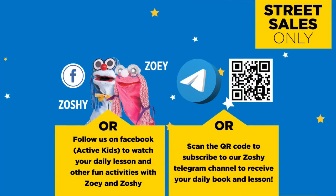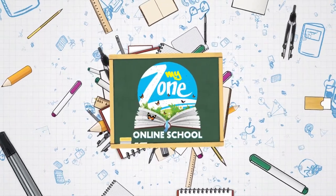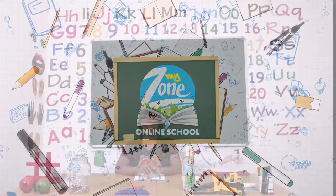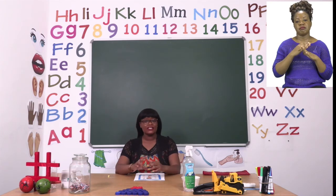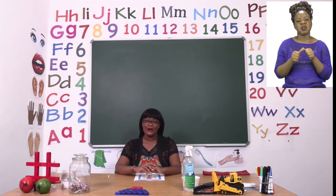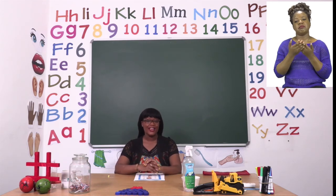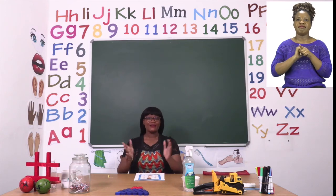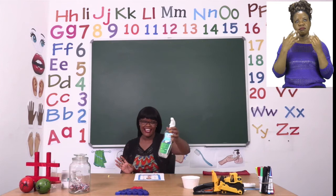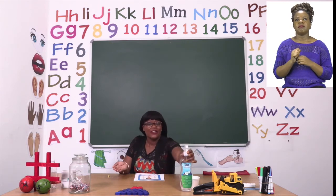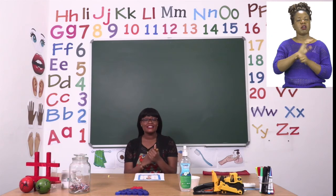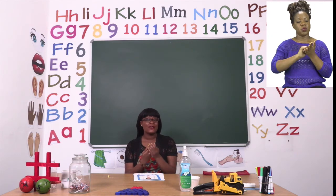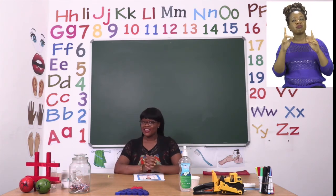Follow us on MyZone Facebook, Active Kids, to watch your daily lesson and other fun activities with Zoe and Zosie. Boys and girls, we have now come to the end of our lesson and I hope you had fun. Remember, if you're not sure what to do or something is very hard, it's okay to ask for help — just make sure you finish your work by yourself. Remember to practice, practice, practice. Now that we are done with our lesson, we need to sanitize. Sanitizing doesn't mean that you are going to be 100% safe, so you also need to practice good social distancing and use soap and water. Don't forget to wear a mask when you are out in public. Make sure your hands are dry before you touch anything else.